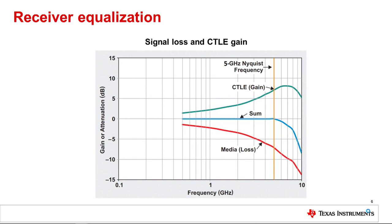As you can see in this USB 3.2 Gen 2 example, the channel loss at the Nyquist frequency of 5 gigahertz is around negative 7 dB. The CTLE gain setting selected for the redriver is about 7 dB to offset the channel loss.